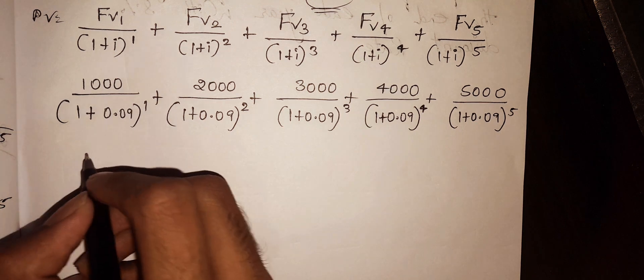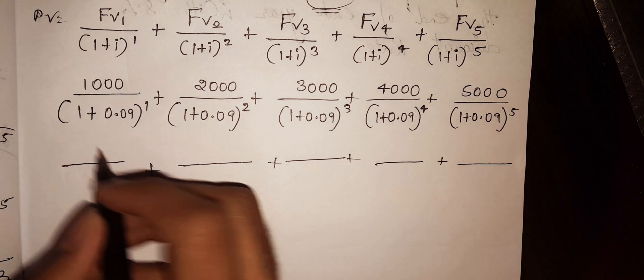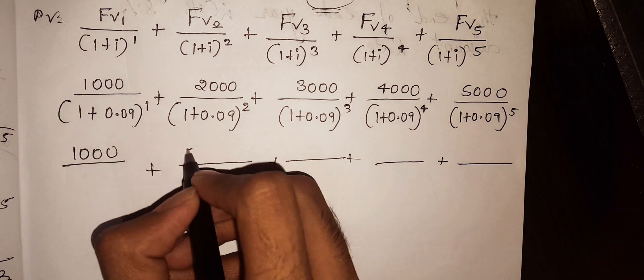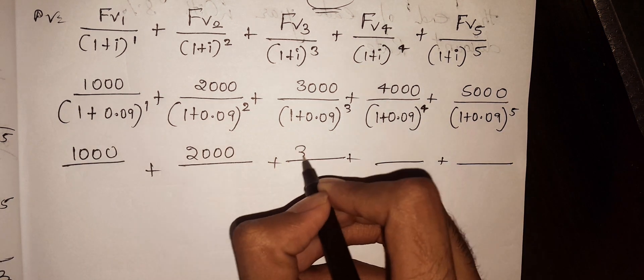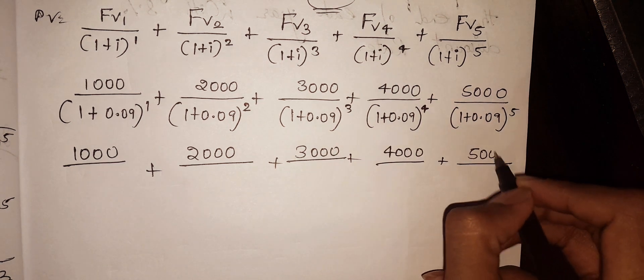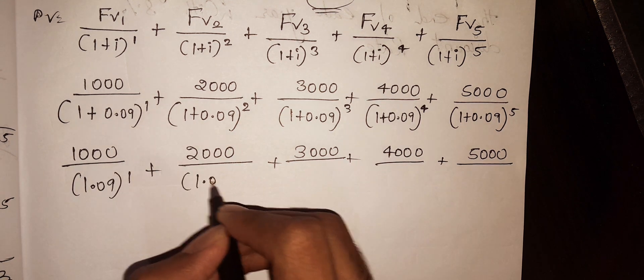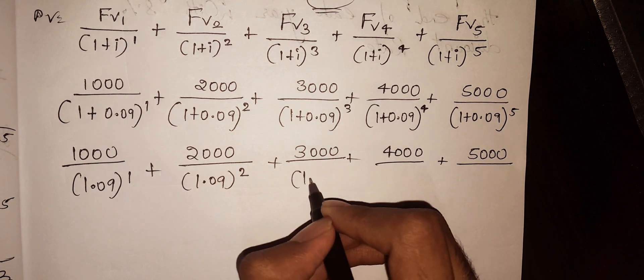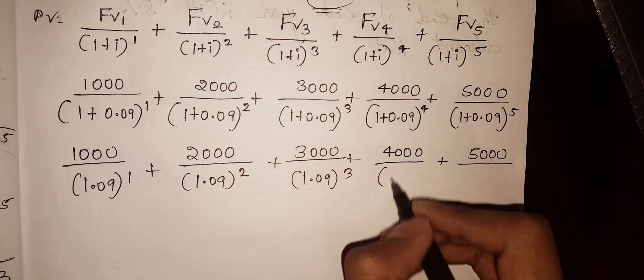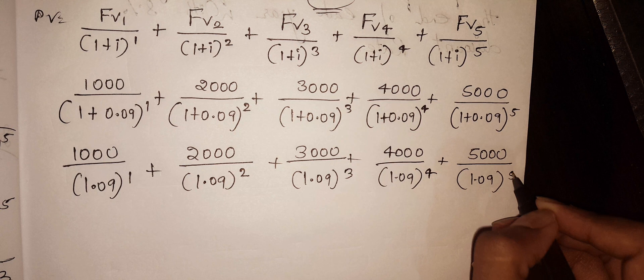When I consolidate and write: 1000, 2000, 3000, 4000, 5000 in the numerators, with 1.09 to the power of 4 and 1.09 to the power of 5 in the denominators.